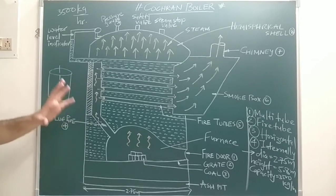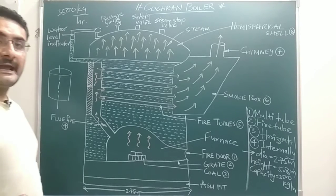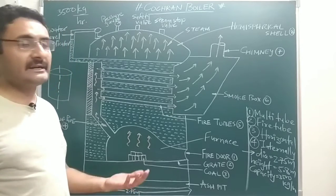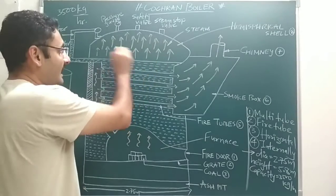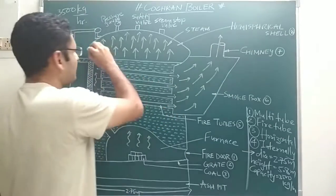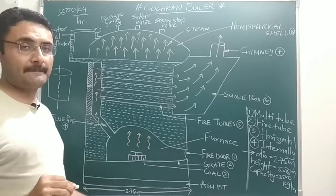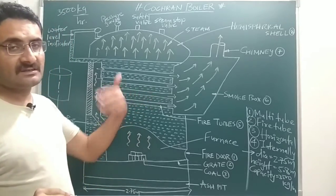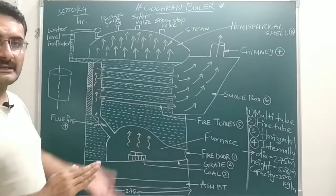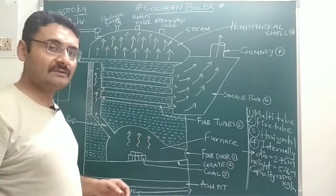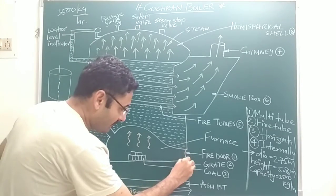Now we will discuss the working principle. As you know, any boiler is used to generate high-pressure and high-temperature steam. The steam is collected in a hemispherical shell. That high-pressure, high-temperature steam is used in power plants to produce electricity. Now, how does the Cochran boiler generate high-pressure and high-temperature steam? First, we open the fire door.